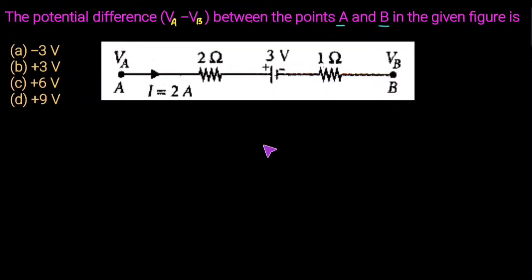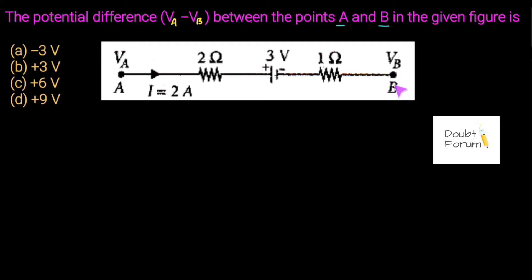Hello friends, welcome to Doubt Forum. In this question we are asked to find the voltage of point A minus the voltage at point B. The question is: find the potential difference V_A minus V_B between the points A and B in the given figure. The figure and the four options are given.